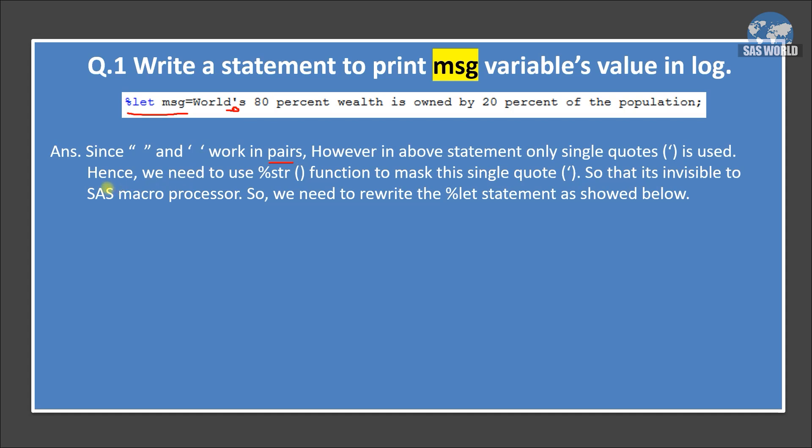To overcome this, we have one macro function that is called percent str. This is a masking function and this will mask or hide the meaning of single quotes. So the macro processor would not look for another single quote. In another way, we say that this is invisible to SAS macro processor.